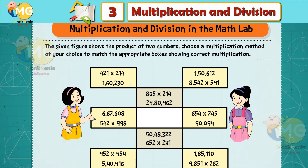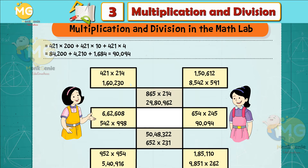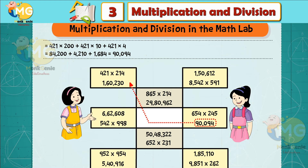Multiplication and division in the math lab: the given figure shows the product of two numbers. Choose a multiplication method of your choice. For example, multiply 421 × 214 by expanded notation: 421 × (200 + 10 + 4) = 421 × 200 + 421 × 10 + 421 × 4 = 84,200 + 4,210 + 1,684 = 90,094.